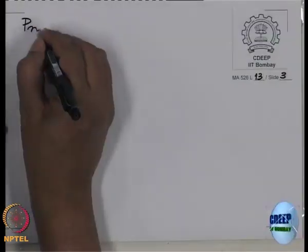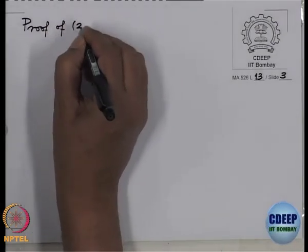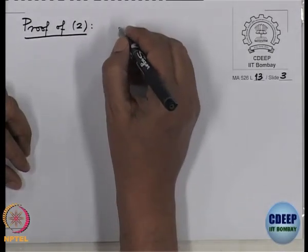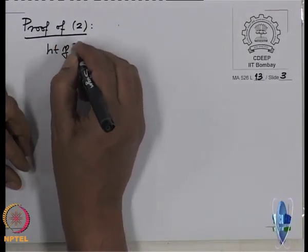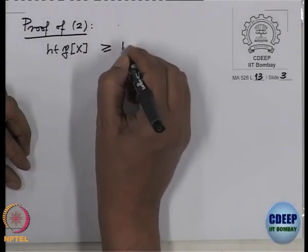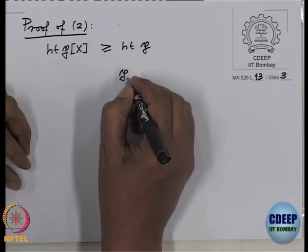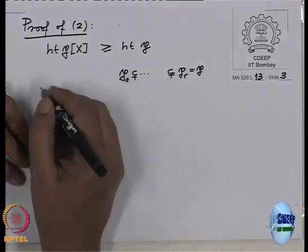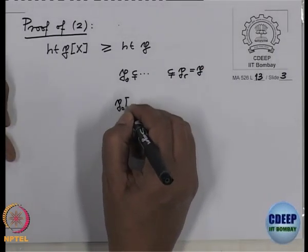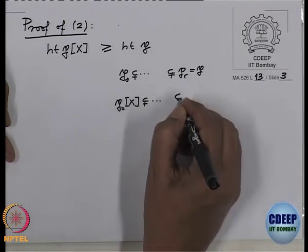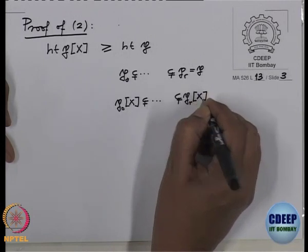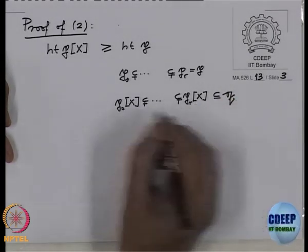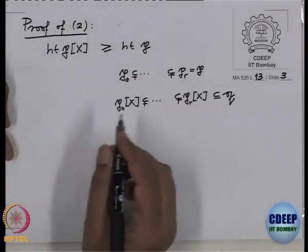Proof of part 2. First, note that height of PX is definitely ≥ height of P. This follows from the fact that if I take a chain of prime ideals of length r ending at P and extend those to B — so P_0^X ⊂ ... ⊂ P_r^X — this will be a proper chain of prime ideals in B contained in Q. Therefore height of Q ≥ height of PX, and this holds for every chain.